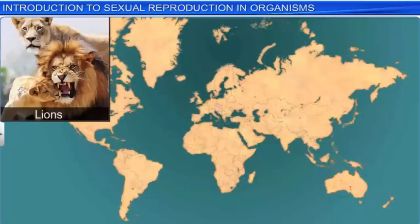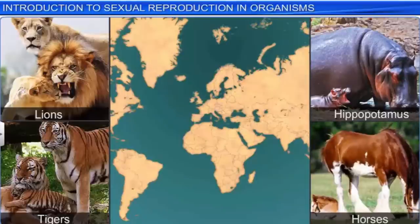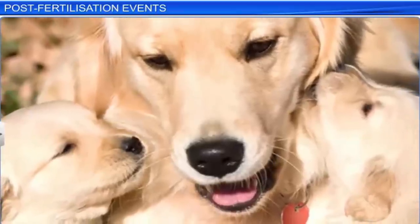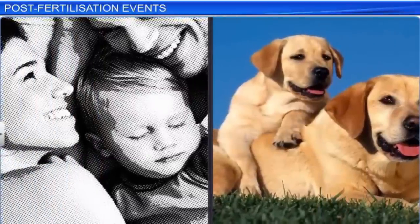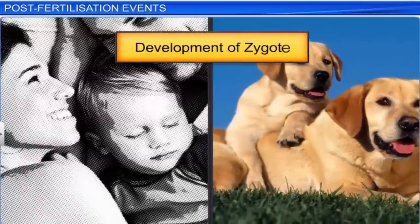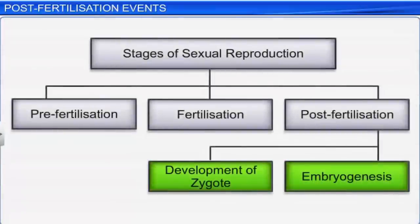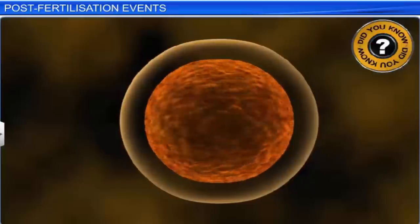In most organisms, the reproductive phase plays a crucial role as it ensures continuity of life. The birth of an offspring is perhaps one of the most important and joyous events in the life of a sexually reproducing organism. This event, however, is a culmination of events such as the development of the zygote and embryogenesis — both of which are the mainstay of post-fertilization, the third stage in sexual reproduction.